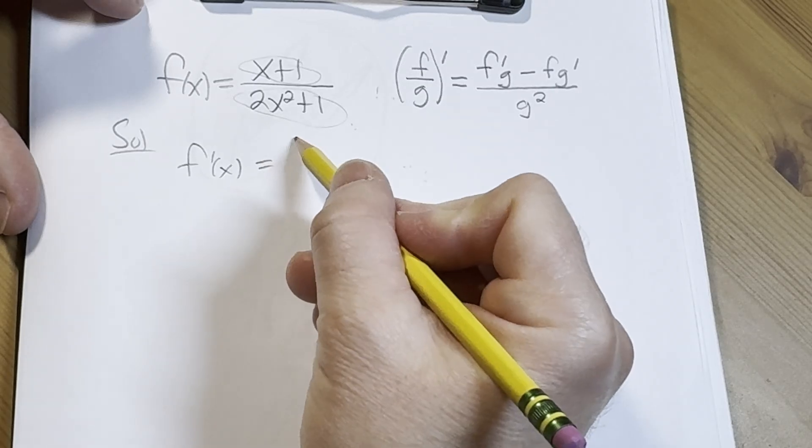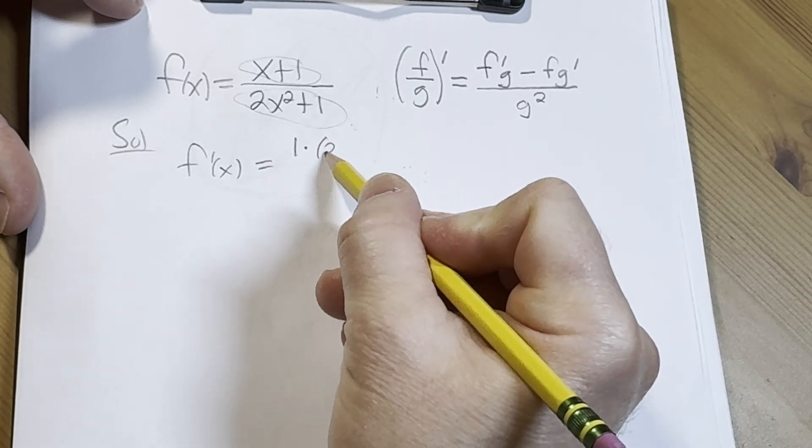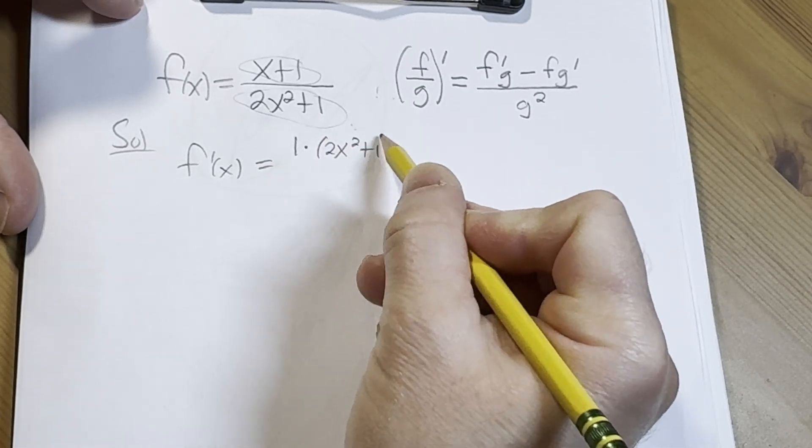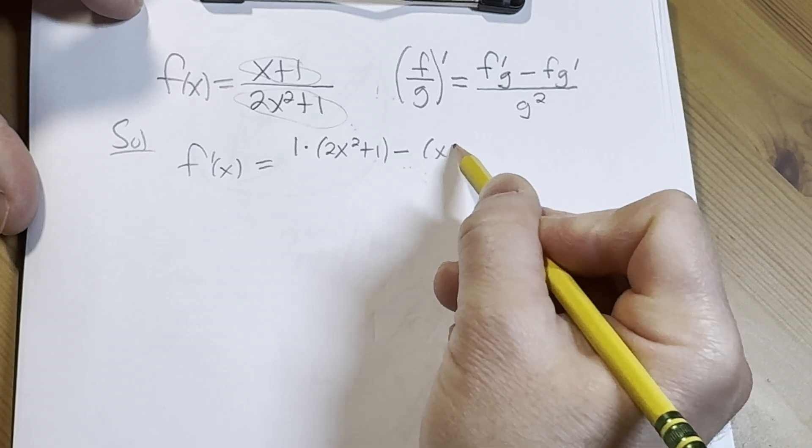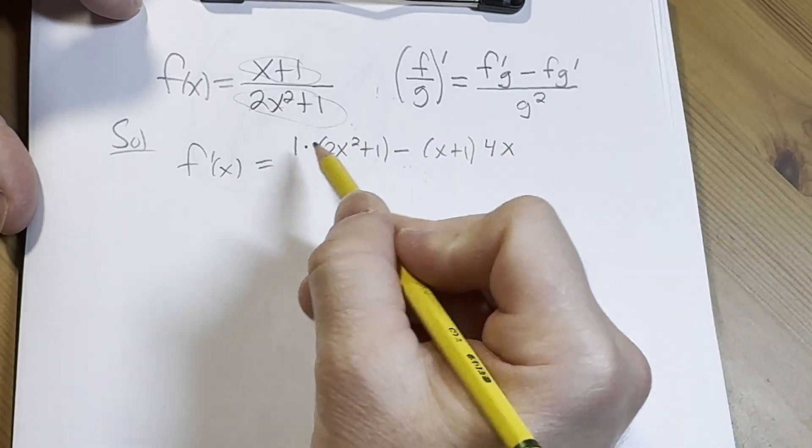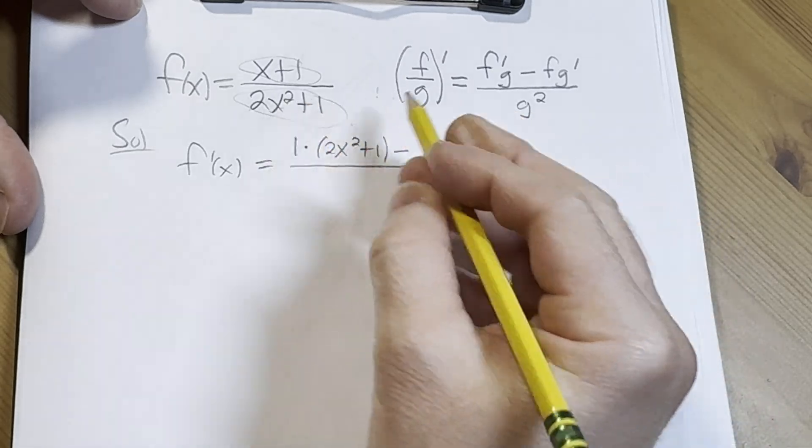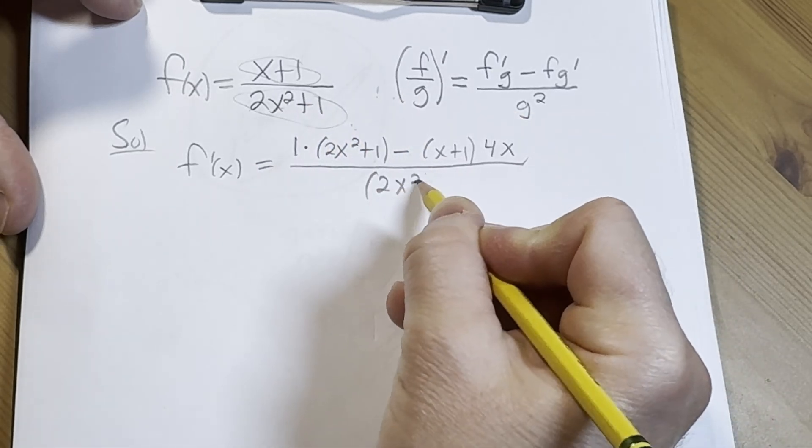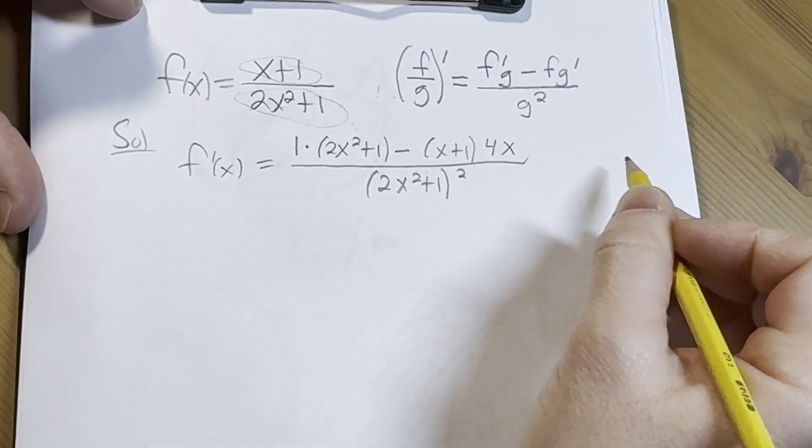The derivative of the top is 1, times the bottom, minus the top which is x plus 1, times the derivative of the bottom which is 4x (since the derivative of 1 is 0), all over the bottom squared, which is (2x² + 1)².